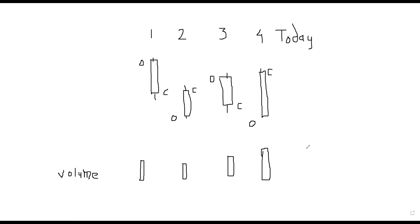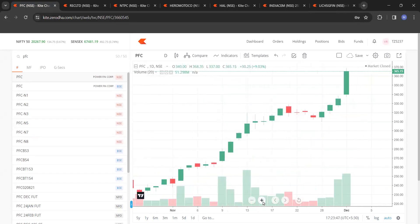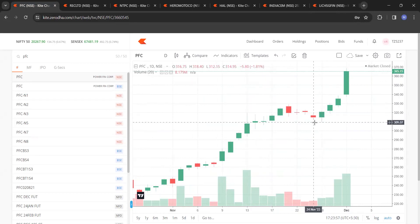Let's go to charts now — this is not an isolated example, you will see many more. This is part one; I don't want to make a lengthy video. The purpose is education — how a common man can make money. The first chart I'd like to show is Power Finance Corporation. Whatever I just told you — you can see it right here.